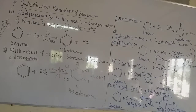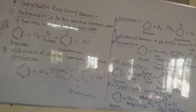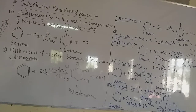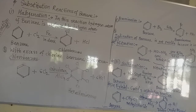In the last lecture, we already saw the addition reactions of benzene. Today we have to learn the substitution reactions of benzene. In addition reactions, the molecule we add — such as hydrogen, chlorine, ozone, etc. — gets completely added into benzene. We saw three addition reactions: addition of hydrogen, addition of chlorine, and addition of ozone.